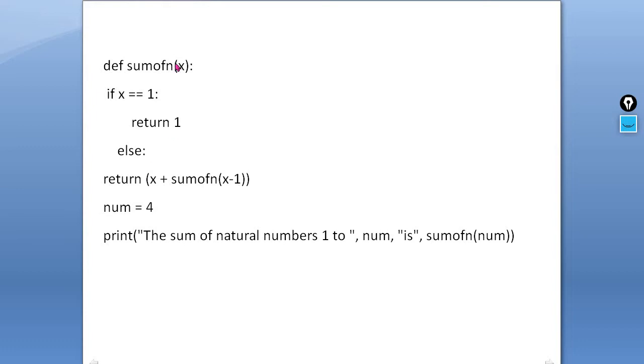Suppose if the value of x is 2, then control will come to the else part and the value of x becomes 2 plus 2 minus 1, 1. It means 2 plus 1, then it becomes 3. So our code is complete here. This sum of n function is calling itself.